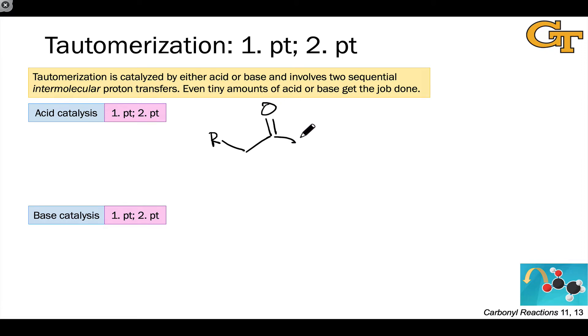I'm going to draw it and then erase it because it's what doesn't happen. One thing we might think to do if we look at the structures of, say, a general keto form and a general enol form is simply to transfer a proton from the alpha carbon to the carbonyl oxygen.